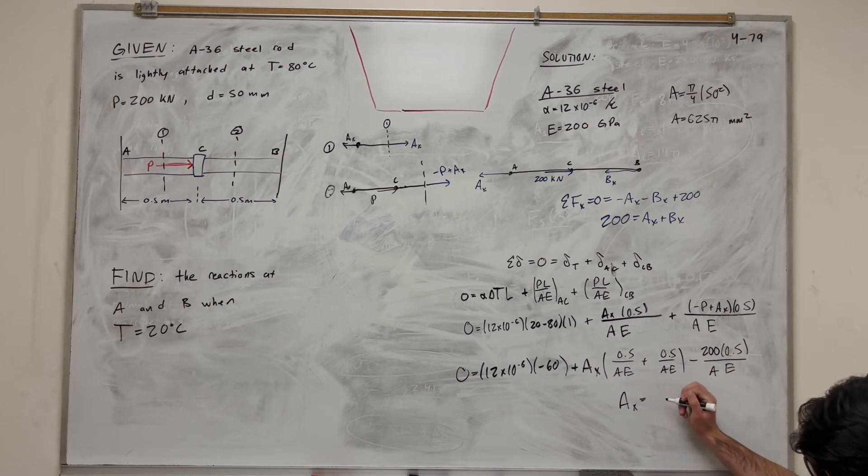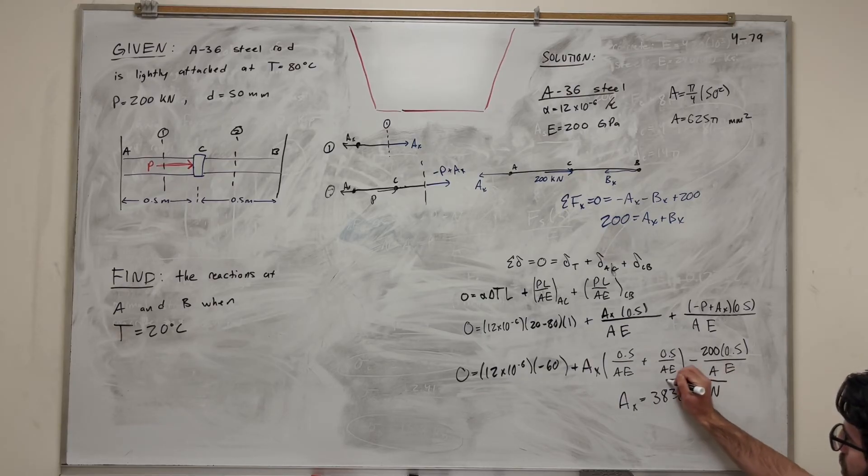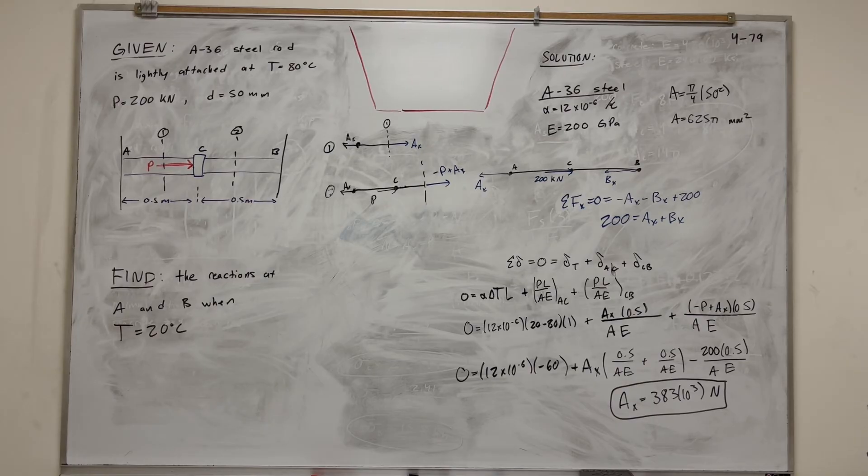And if you do the math on all that, you get that A_X is equal to 383 times 10 to the third Newtons. And there you go. Cool, right? So that's how you find A_X.